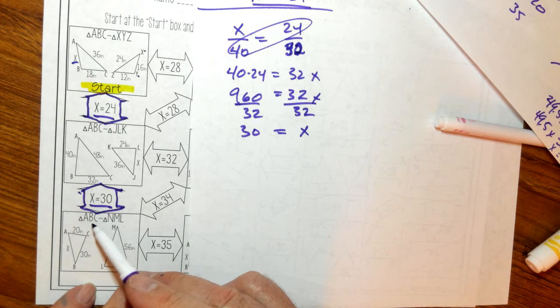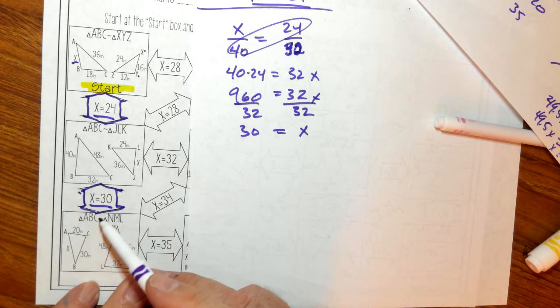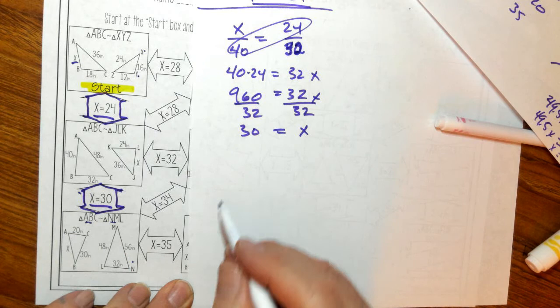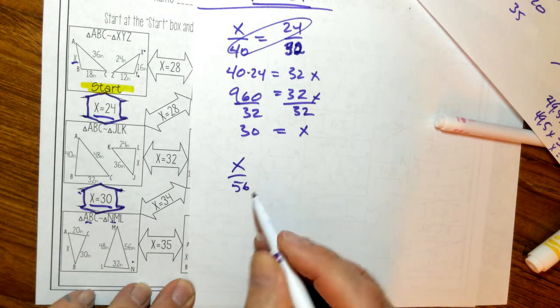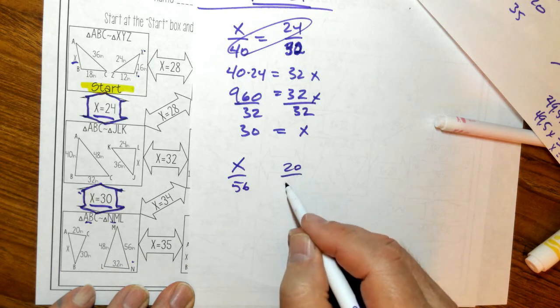So I have triangle ABC is similar to triangle NML. So I'm solving for AB. So I have to go to NM. And NM is 56. So I say X is to 56 as 20 is to 32.